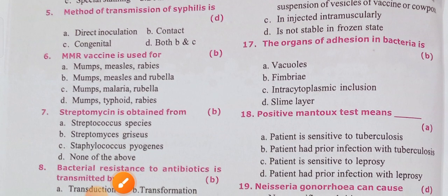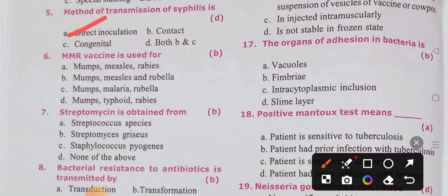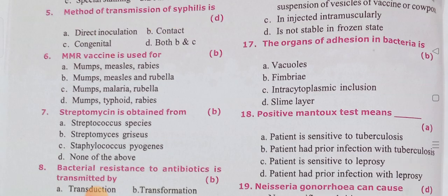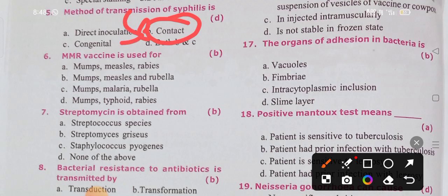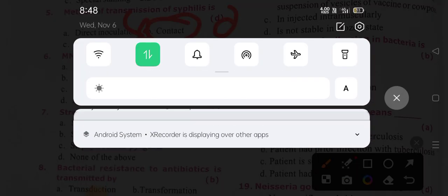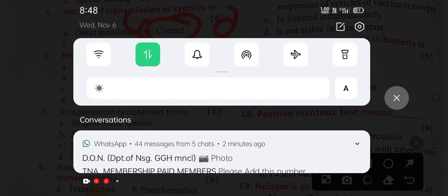The method of transmission of syphilis — it may be contact or it may be congenital. Syphilis is a contact disease; it is one of the STDs — sexually transmitted diseases. The correct answer is option B: sexual contact.